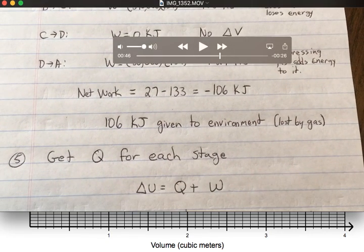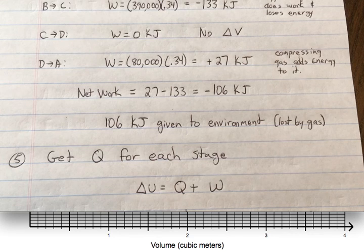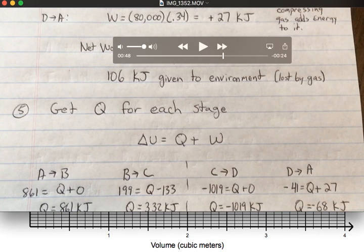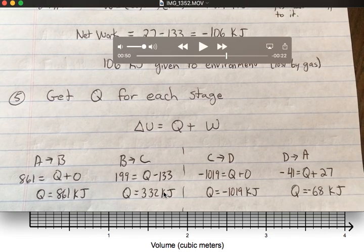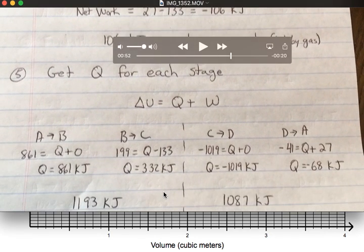Next, we get the Q for each stage. This is where we use our first law of thermodynamics. The change in internal energy equals Q plus W. We use our change in internal energies and our works to find our Qs. So, you have to keep very organized.